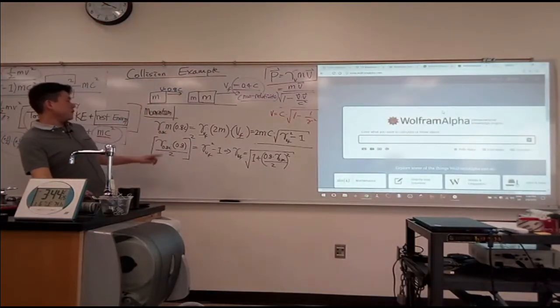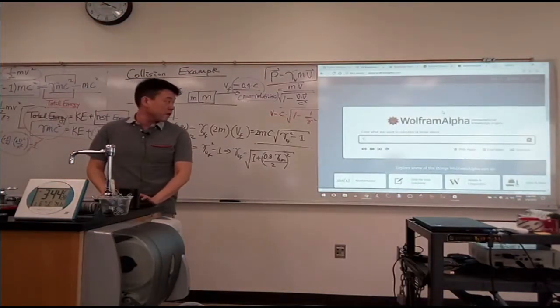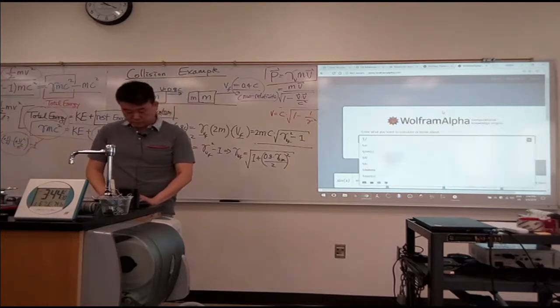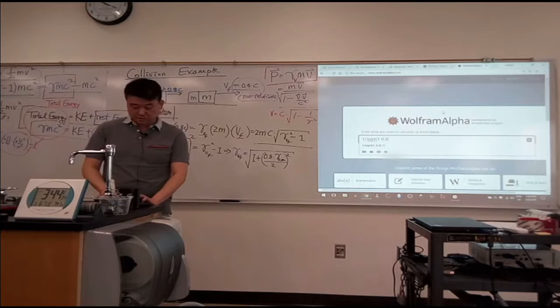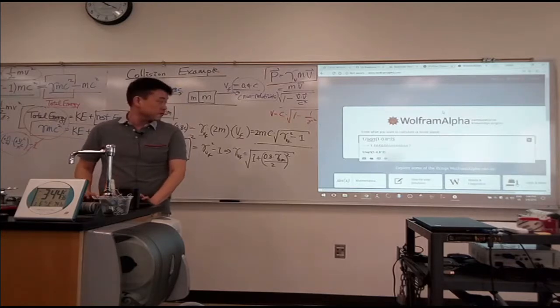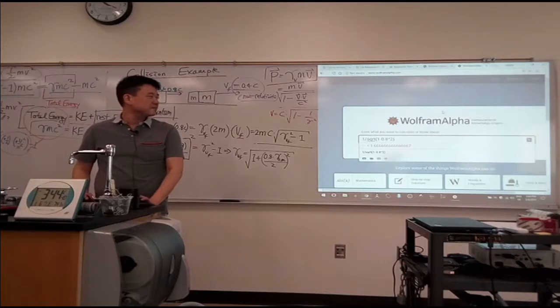So I need this numerical value first. So that's going to be 1 over square root of 1 minus 0.8 squared. So 1 point that... What is that? Is it 5 thirds? That's 5 thirds, right? Alright.